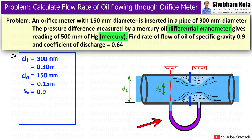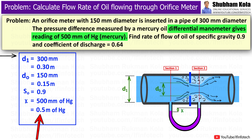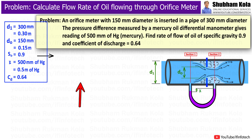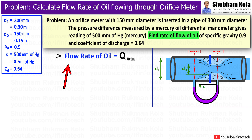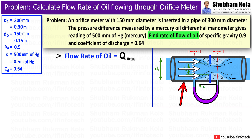The differential manometer contains mercury and gives a reading of 500mm, so small x equals 0.5m of Hg. We need to find the rate of flow of oil flowing through the pipe, whose specific gravity is given as 0.9. To calculate the flow rate of oil, i.e. the discharge of oil, I will use the formula for discharge derived in the previous video.